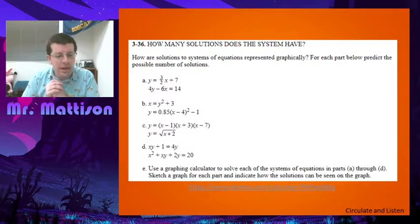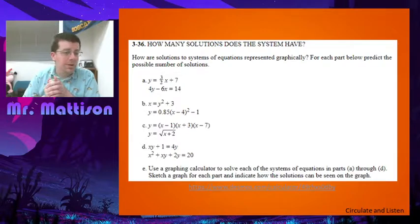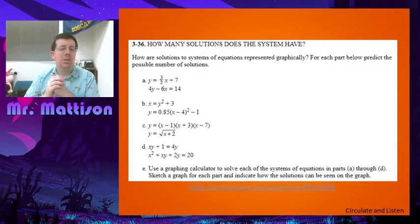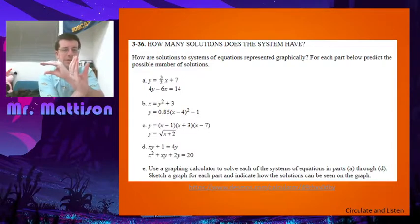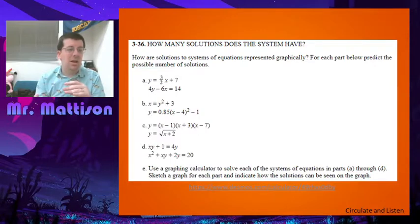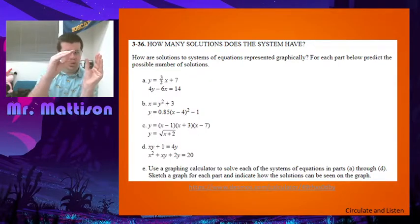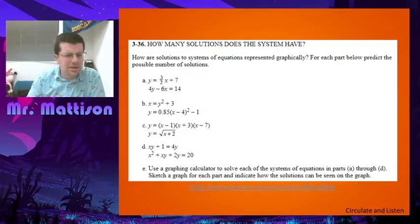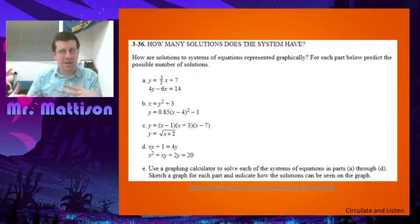On B, we have a sideways parabola and a normal vertical parabola. We could have no solutions where they never touch, one where they're just tangent, two where it crosses, three where it touches and crosses, or four where they open up towards each other and intersect at all four places. So I could have between zero and four intersections.